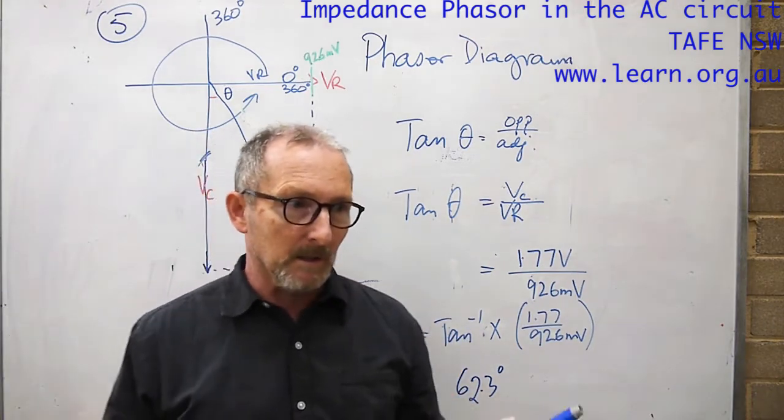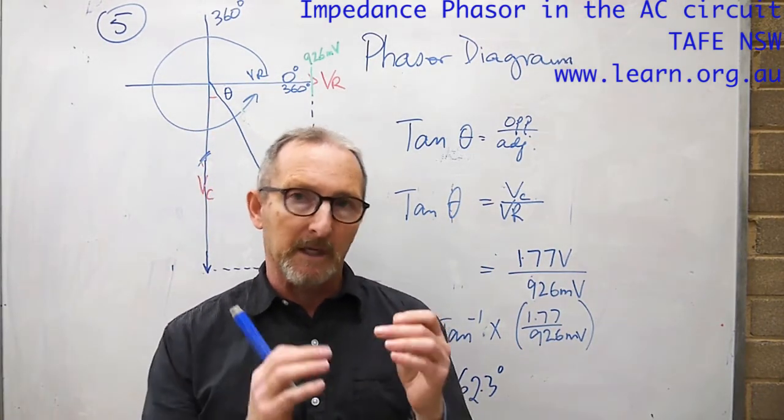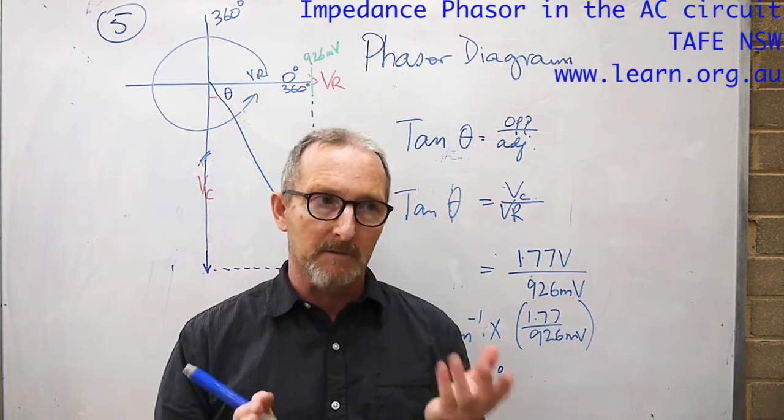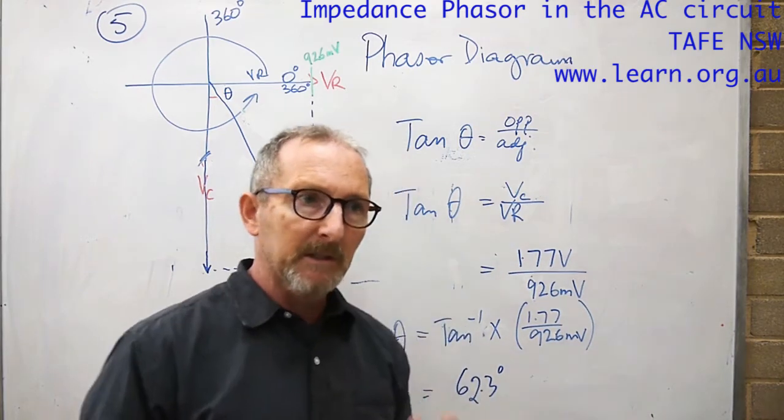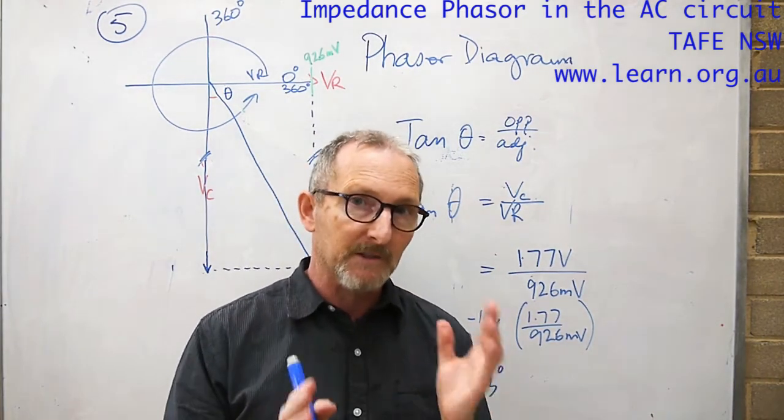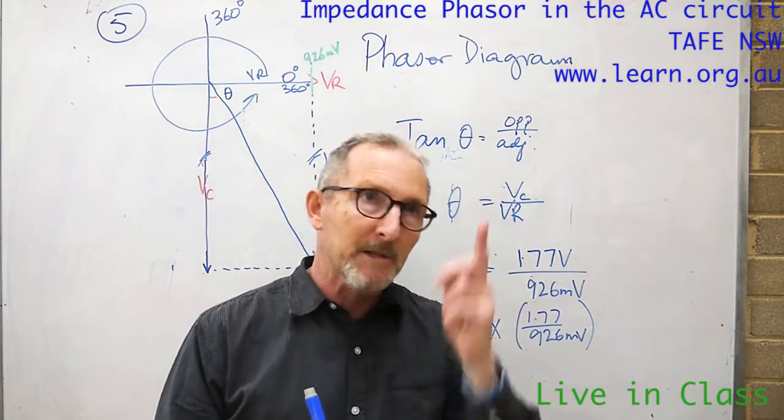On the other board with this video we got to point number 4 where we work out the voltage across the resistor and the voltage across the capacitor. Now we take this whole procedure to the last step, step 5, well maybe the second last step, and we do the phasor diagram for it.